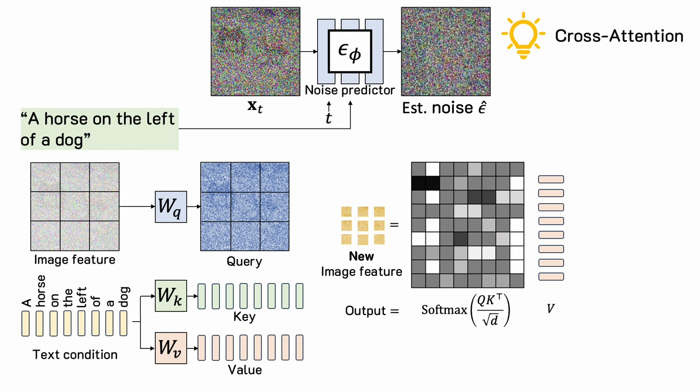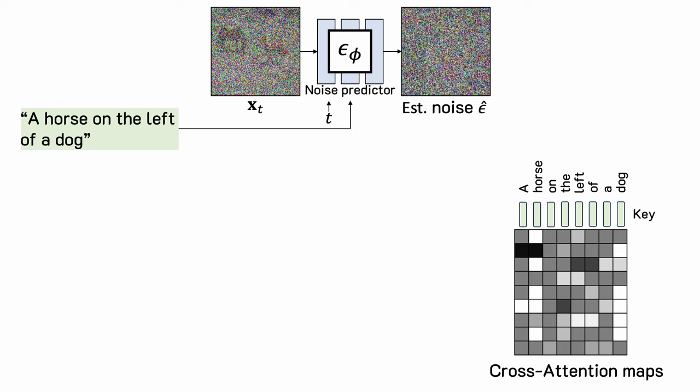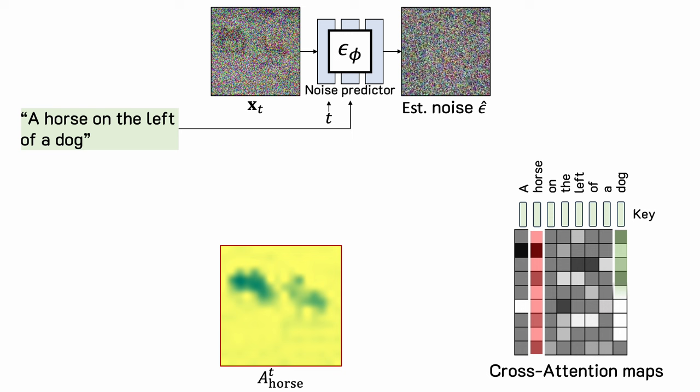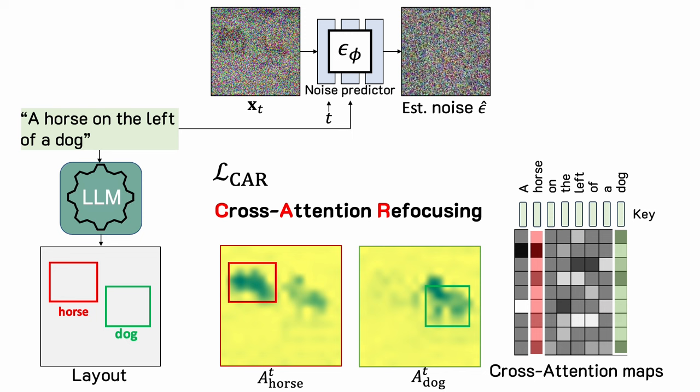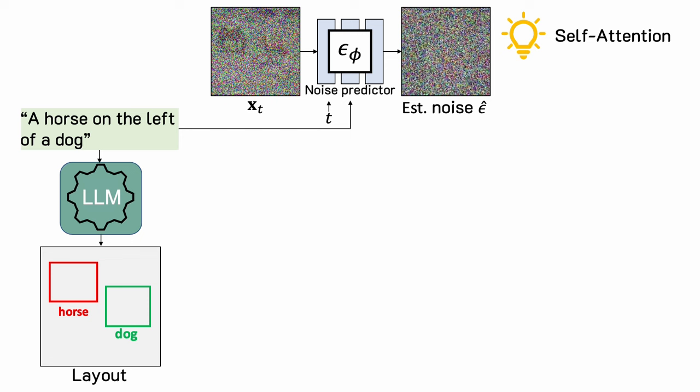Visualizing the cross attention maps helps us understand where the text information is injected into the image. Here are the cross attention maps corresponding to the horse and the dog tokens. Our idea is to use the predicted layout to guide the cross attention maps — specifically, to have higher attention weights within the bounding box for the correct token and lower attention weights for regions outside the box. We formulate this as a loss function and call it cross attention refocusing. Because this is a differentiable function of the noisy image x_t, we can update it using gradient descent.